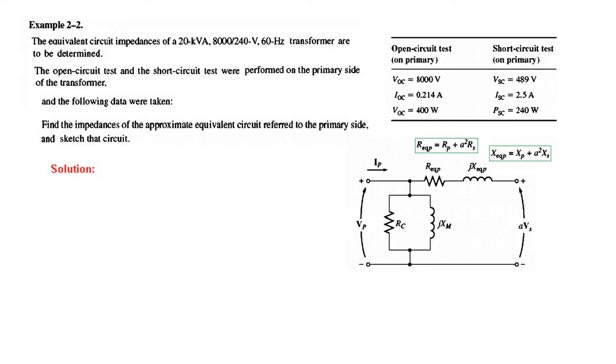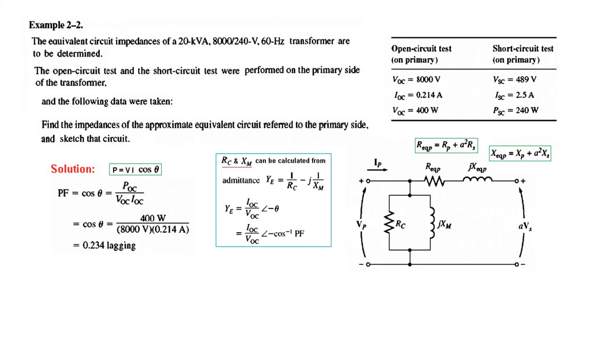So we have to calculate Rc, Xm and R equivalent and X equivalent. So we now have already derived all the formulas. So we'll just plug in those values. These were for the admittance components. And as we have, we know that P is VI cos theta. So from here, we can calculate cos theta which is power factor. So power factor is cos theta is equal to power divided by voltage into current. We know all these values from here. This is wrong. It should be POC. So 400 watt divided by the voltage divided by the current from the open circuit test.